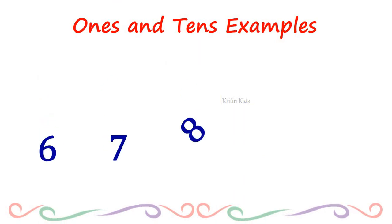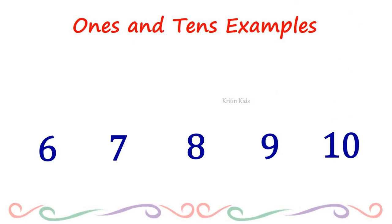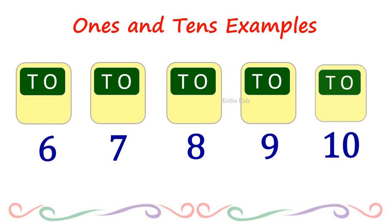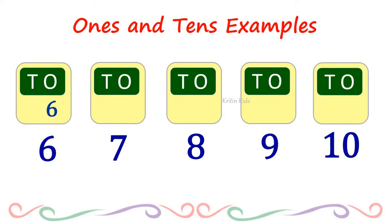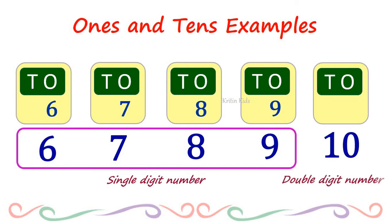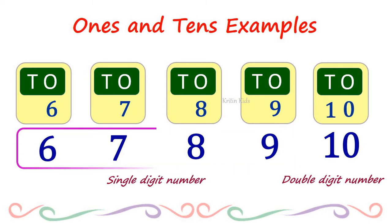Let's take some more numbers: 6, 7, 8, 9, 10. Now let us write 10s and 1s for this example. Place value of 6 is 1s, place value of 7 is 1s, place value of 8 is 1s, place value of 9 is 1s. All these numbers are single digit numbers — only 1 digit is there. Now the next one is 10. Here it is a double digit number. In this case, 0 has the place value 1s and 1 has the place value 10s.